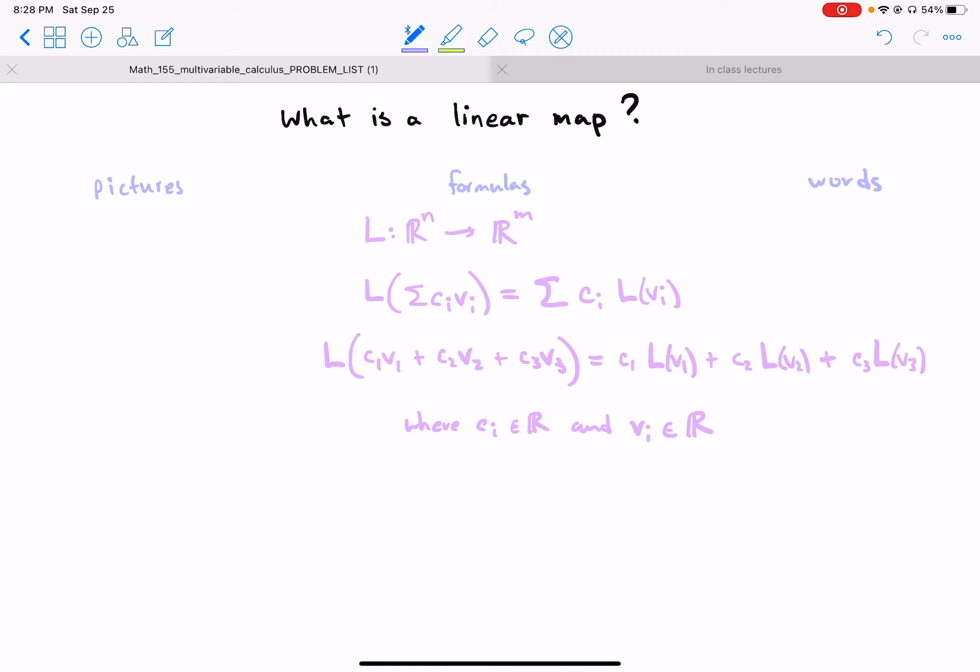well, they have to be in the input space because we have to feed them in. And this is L evaluated at V1—it's not L times V1, it's L evaluated at V1 and then multiplied or scaled by the real number C1. So this has to be, oh so I left off the N—so these are vectors, they have to be in the input space.